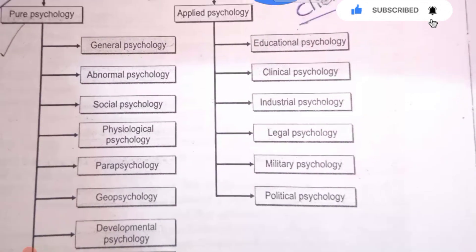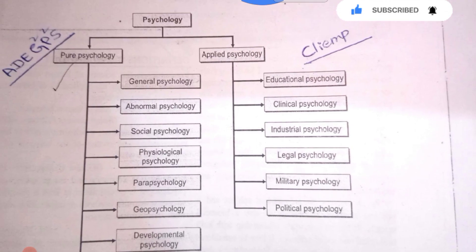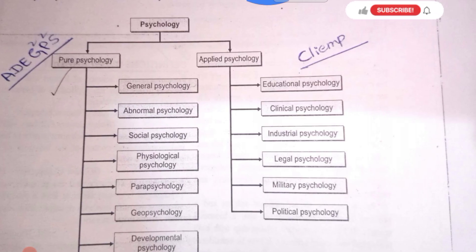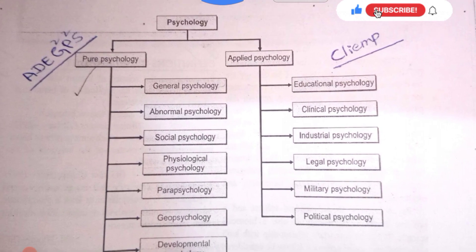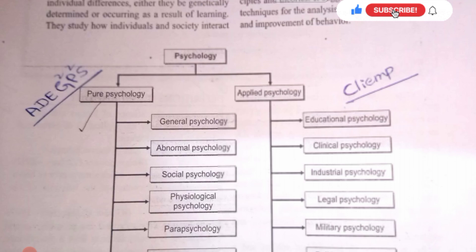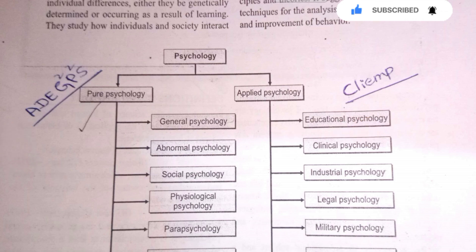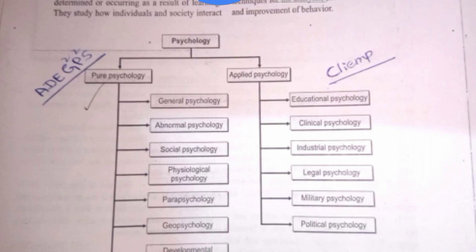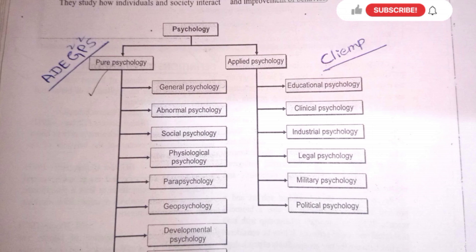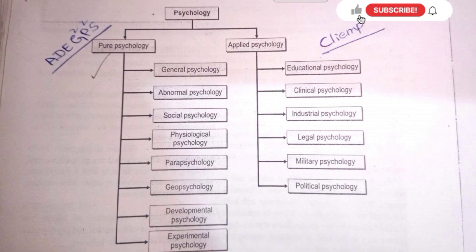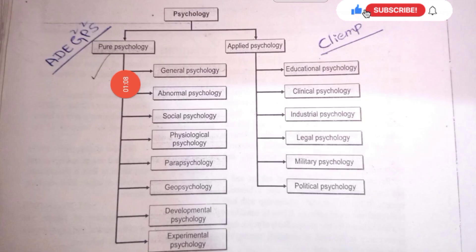Next, we will talk about Psychology Branches. We will use a mnemonic word to learn them. The word is called GPS — you will learn the word and its sub-types using this mnemonic.